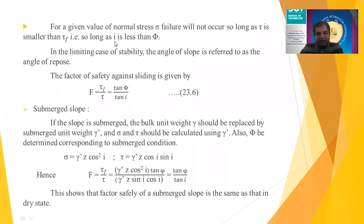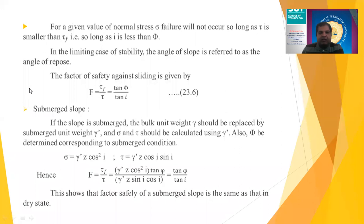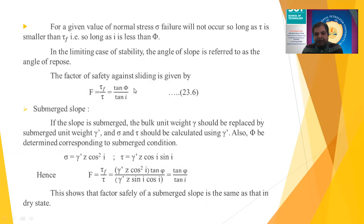For a given normal stress, failure does not occur as long as τ is smaller than τ_F (the shear strength), i.e., as long as I < φ. For the limiting case of stability, the slope angle is referred to as the angle of repose. The factor of safety against sliding is F = τ_F / τ = tan φ / tan I.